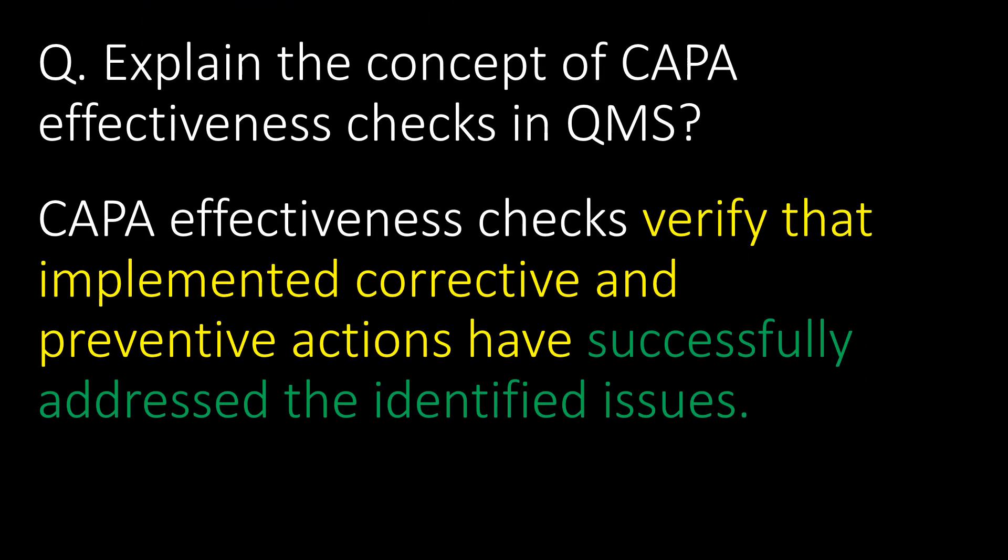Explain the concept of CAPA effectiveness check in QMS. The CAPA effectiveness check verifies that implemented corrective and preventive actions have successfully addressed the identified issues.